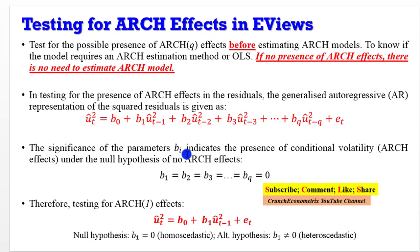The significance of the parameters b_i, from beta_1 to beta_q, indicates the presence of conditional volatility, that is ARCH effects, under the null hypothesis of no ARCH effects. The null hypothesis is beta_1 to beta_q equals zero.